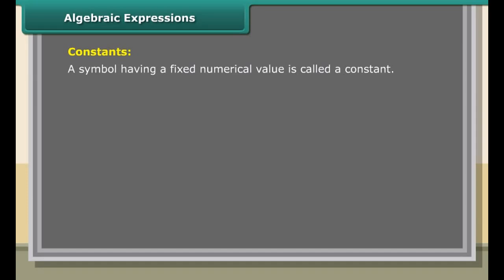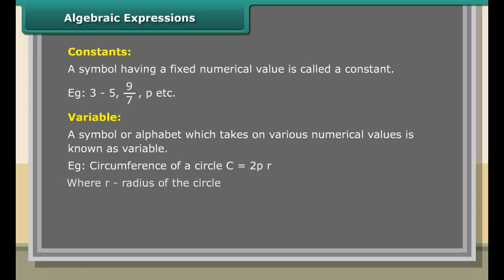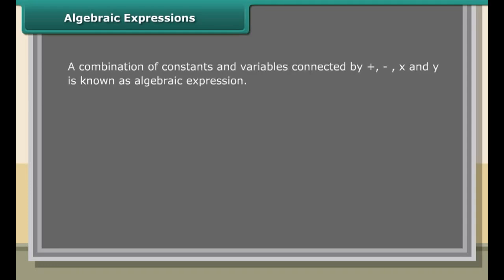Breaking down expressions: a symbol having a fixed numerical value is called a constant — for example, 3, minus 5, 9/7. A symbol or alphabet which takes on various numerical values is known as a variable — for example, the circumference of a circle C equals 2πR, where R is the radius; 2π are constants and C, R are variables. A combination of constants and variables connected by plus, minus, multiplication and division is known as an algebraic expression.